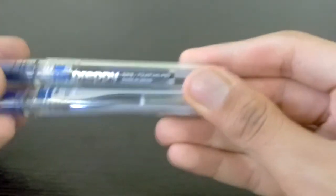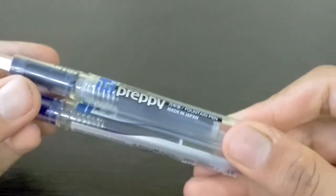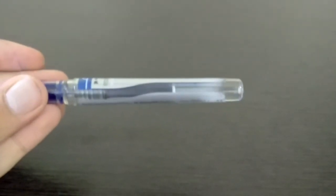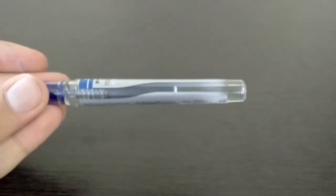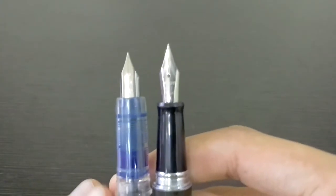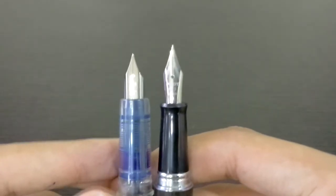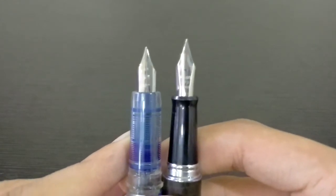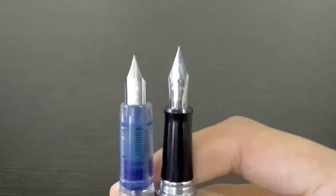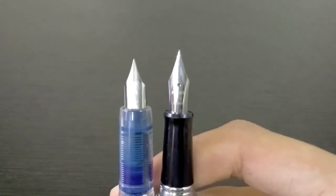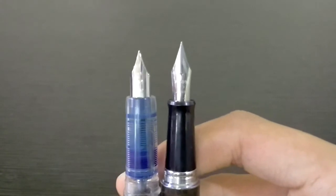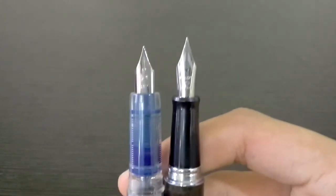Talking about the nib, I have one more pen over here which can be compared in terms of nib, which is the Pilot Metropolitan. These two nibs can be compared to each other. Of course the nib of the Pilot is a little larger compared to Preppy, but we can see that the nib points on both pens is almost the same. This is a huge comparison that we see between both of the pens.